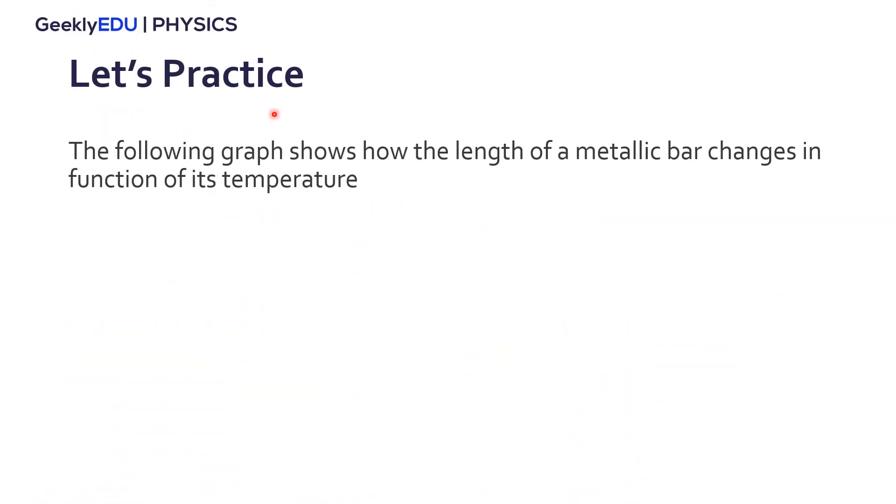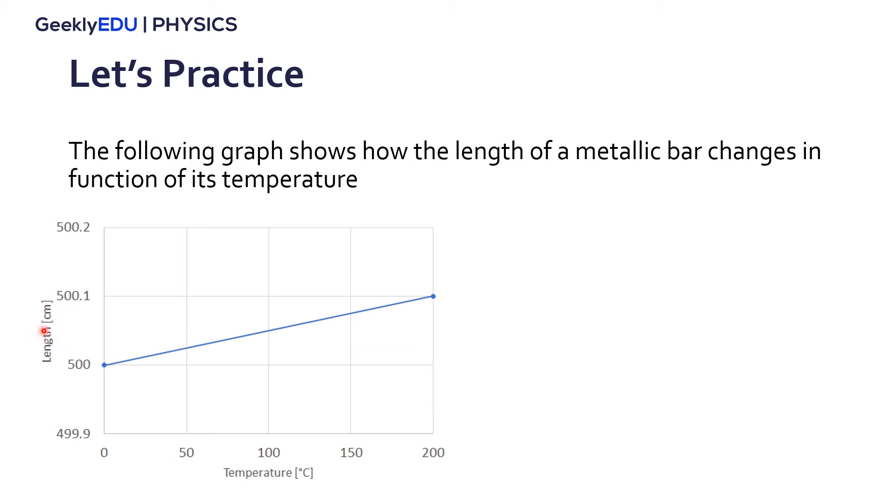Well let's practice a little bit now. So the following graph shows how the length of a metallic bar changes in function of its temperature. So in the y-axis we have length in centimeters and in the x-axis we have the temperature in degrees Celsius.